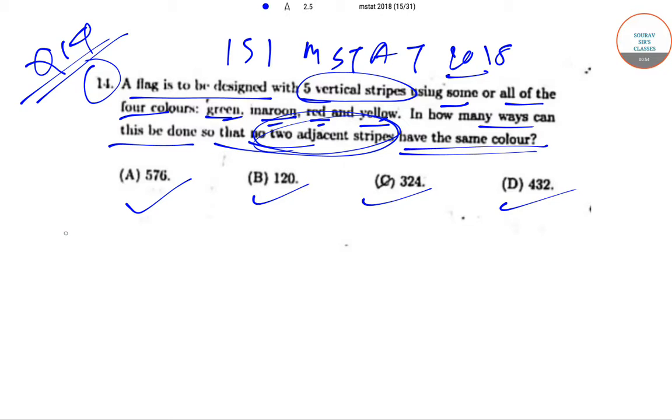Now the flags will look somewhat like this. If these are the five stripes: this is the first stripe, this is the second stripe, third stripe, fourth stripe and the fifth stripe. So this is one, two, three, four, five. These are the five stripes.